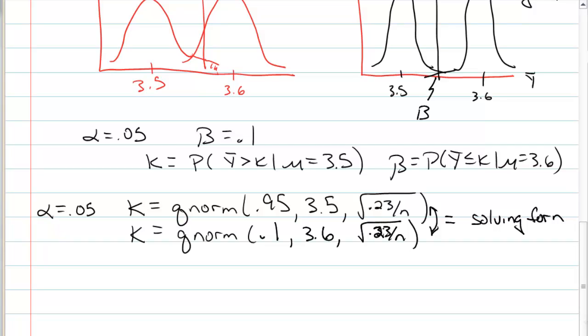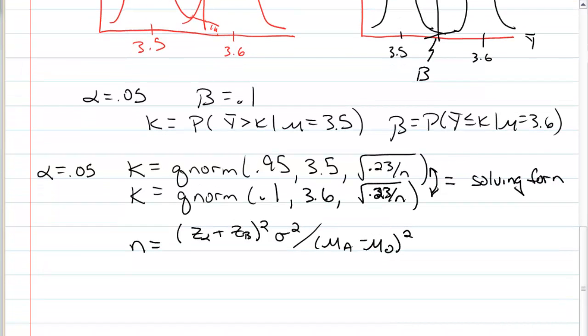So we can do it in R. You can also, if you look in the book, there's a formula for it. It's going to use z, standard normal. The z for alpha, plus the z for beta. We're going to square that, multiply it by the variance, divide it by the difference between the means under the null and the alternative squared. There's that formula.